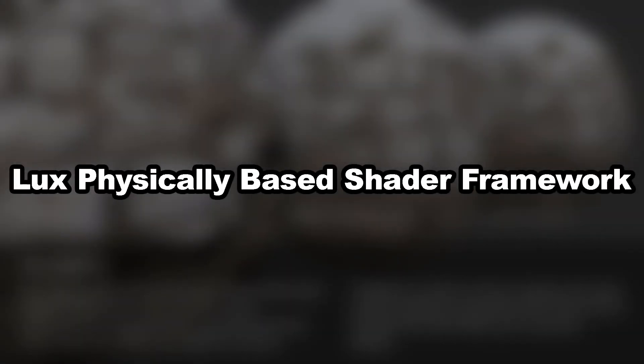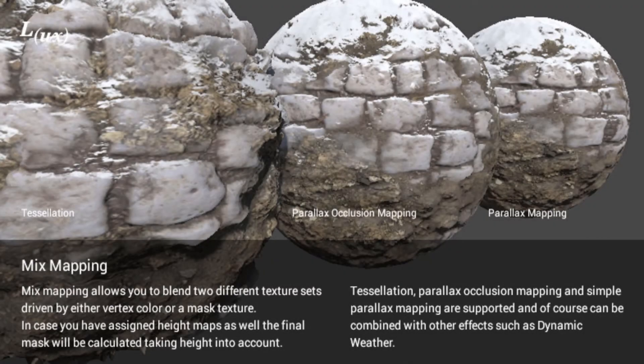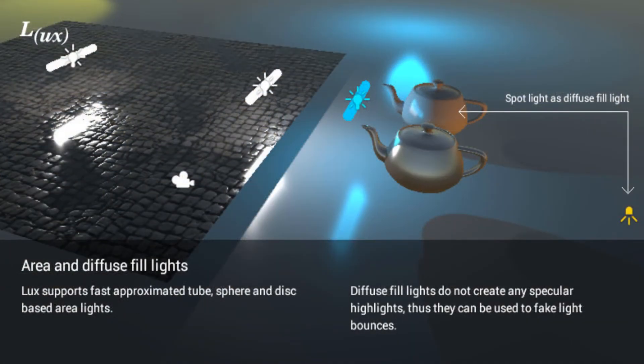Number 1: Luxe Physically Based Shader Framework. Say goodbye to Unity's built-in standard shader. Luxe offers everything the standard shader can do, and much more. To call Luxe a better version of the standard shader is an understatement. There are so many things that Luxe can do that it may be one of the best PBR shaders available for Unity — things such as diffuse scattering, subsurface scattering, refraction, mix mapping, and so much more. I definitely recommend Luxe to anyone who is dissatisfied with the standard shader. It goes a long way to improve the look of your models.